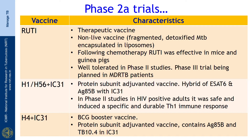The H1 IC31 and H56 IC31 are adjuvanted protein subunit vaccines. H56 is a hybrid of ESAT-6 and Antigen 85B with adjuvant IC31; in Phase 2 studies in HIV-positive adults it was safe and induced a specific and durable Th1 immune response. The H4 IC31 is a BCG booster vaccine — a protein subunit adjuvanted vaccine containing Antigen 85B and TB10.4 in IC31.